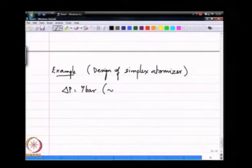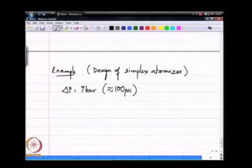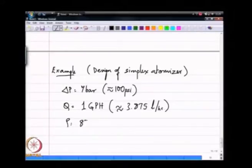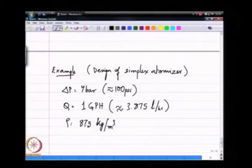Just to give you some flavour for English units as well, that is approximately 100 psi and I want a flow rate of 1 gallon per hour which is approximately 3.875 liters per hour. The density is 875 kg/m3, that is almost like jet A essentially. This is what is given to me. I say can you design a nozzle that will do this.